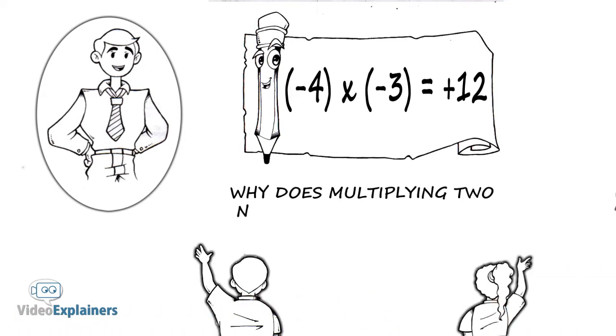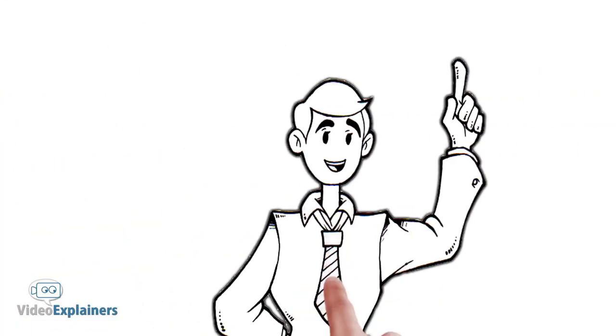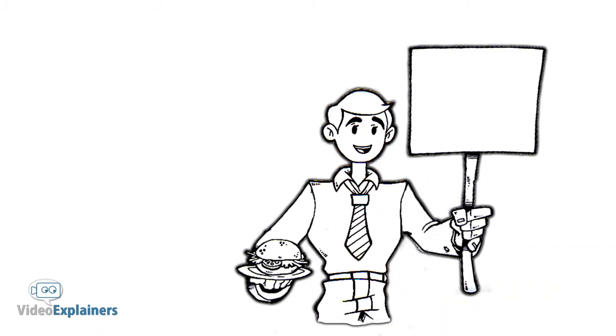Why does multiplying two negative numbers make a positive? Well, first there is the common sense explanation. If I say eat, I am encouraging you to eat. Positive.